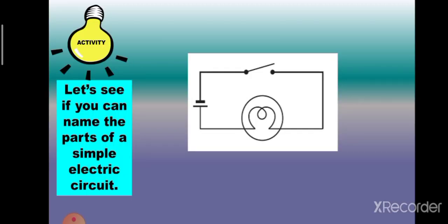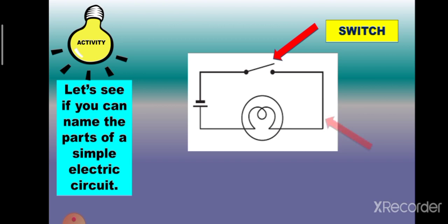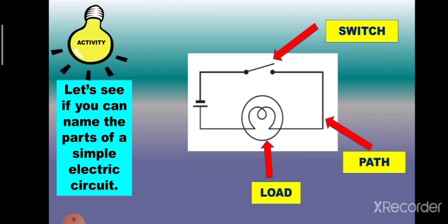There you have it. Now let's see if you remember our lesson. Can you name the parts of a simple electric circuit? Let's see what this part is called. This is the switch. How about this path? This is the path or the wire. Next part — it is the load. And the last part — it is the source or the battery.